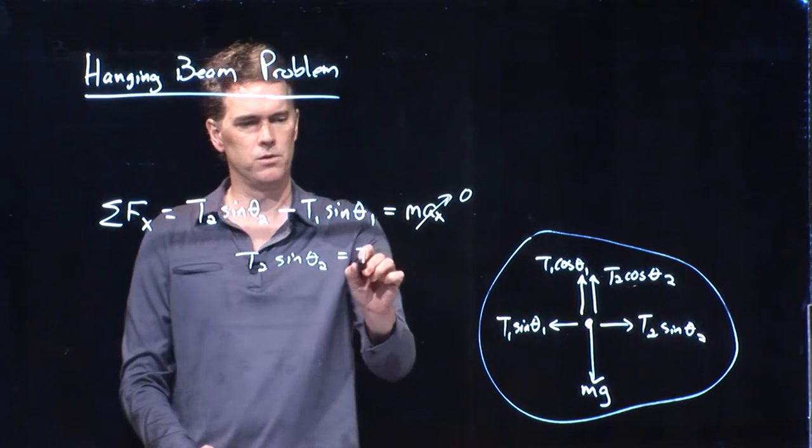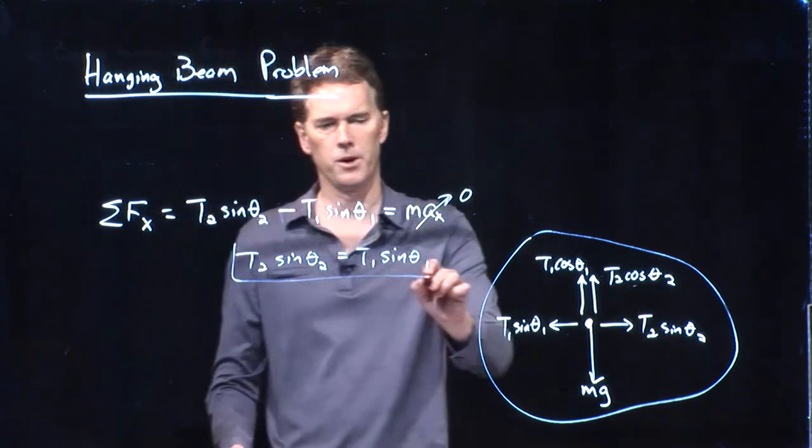You do the forces for the x-direction and y-direction. All right — forces for the x-direction. What are the forces in the x-direction, Laura? T2 sine theta-2 and T1 sine theta-1 — with a minus sign because it's pointing to the left. What is this equal to? The acceleration in the x-direction. And if it's a hanging beam, the acceleration in the x-direction is zero. So we have one nice little equation: T2 sine theta-2 equals T1 sine theta-1.